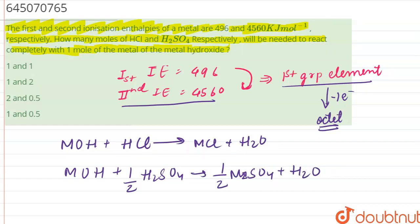So, the answer of this question is 1 and half, which is 1 and 0.5 mole. So, 1 mole of MCL is formed, half mole of M2SO4 is formed. This is 1 and 0.5, which is option number B.